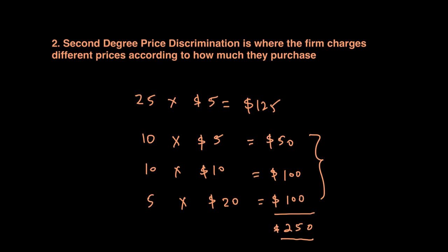Another example of second degree price discrimination includes buy-one-get-one-free offers or two-for-X-dollar deals. All of these mean that the quantity purchased determines how much price the consumer ultimately pays.